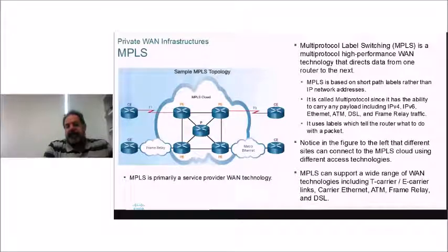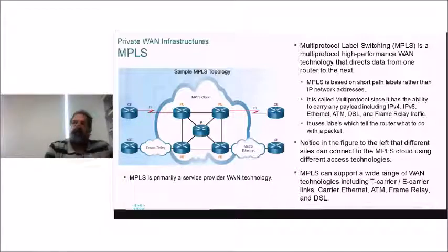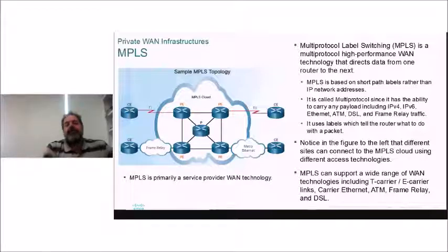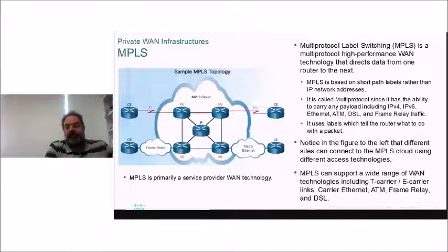MPLS (Multi-Protocol Label Switching) is a high-performance WAN technology that directs data from one router to the next — normally internal to the provider's network. MPLS is based on short path labels rather than IP network addresses. It's called multi-protocol because it can carry any payload — not just IPv4. It uses labels to tell the router what to do with a packet. Different sites can connect to the MPLS cloud using different access technologies — T1, metro Ethernet, frame relay — making MPLS very flexible.